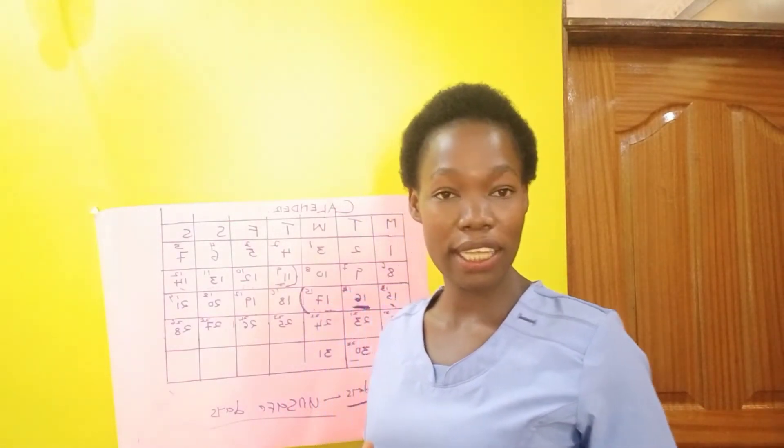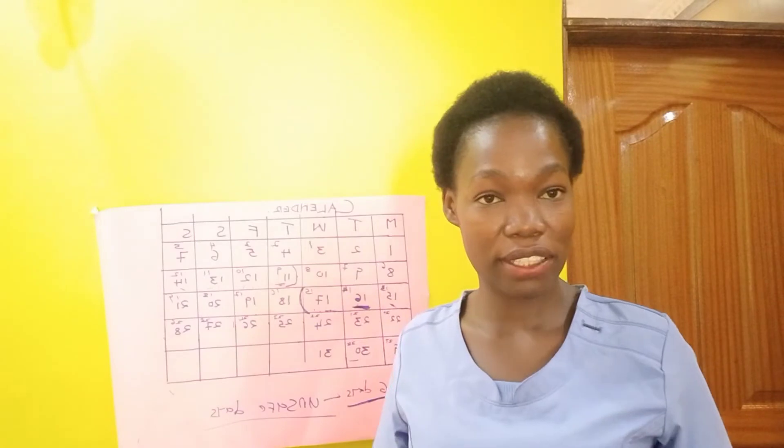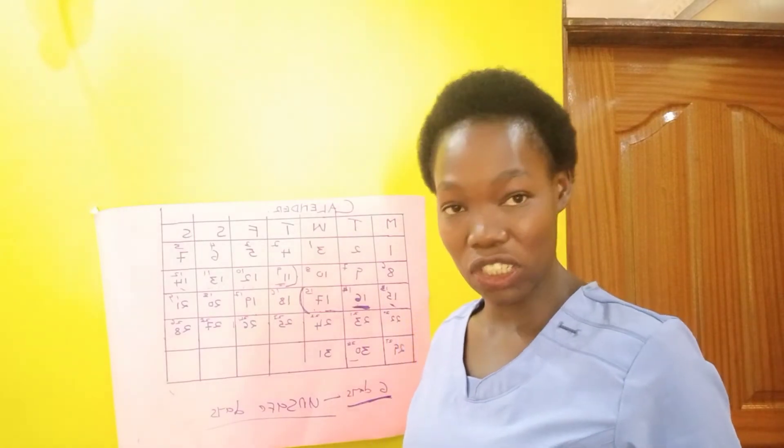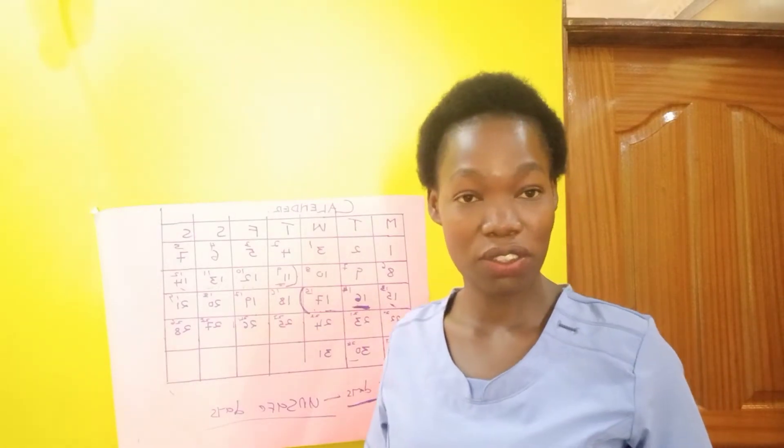Your egg dies 12 to 24 hours after release, and sperm can stay up to five days in your body after ejaculation. This will help you know your fertile days.